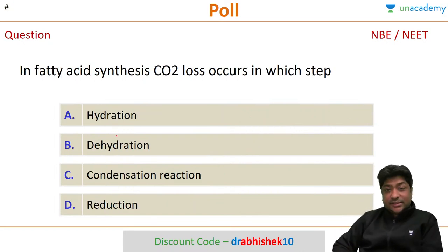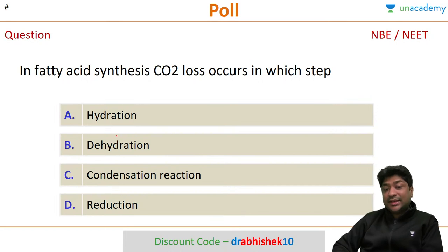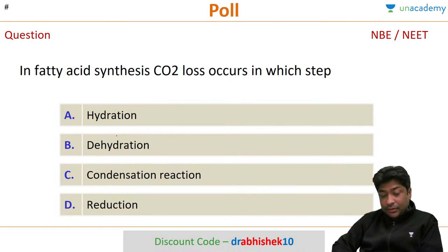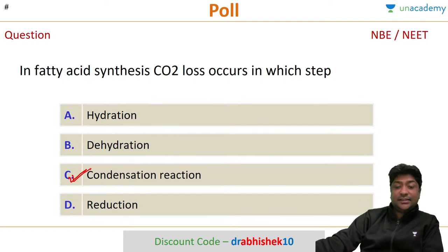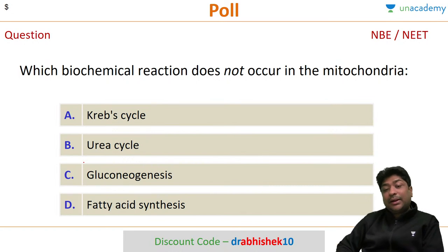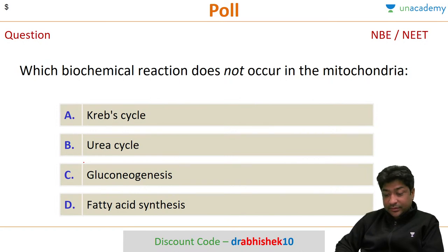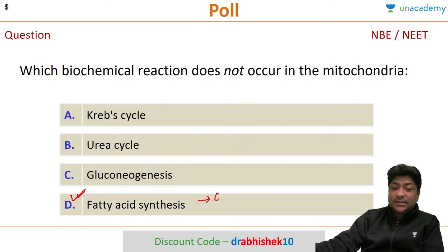Next question: carbon dioxide loss occurs in which step? Options are hydration, dehydration, condensation, or reduction. The correct answer is the condensation step. Last question in this set: which biochemical reaction does NOT occur in mitochondria? Options are Krebs cycle, urea cycle, gluconeogenesis, and fatty acid synthesis. The answer is fatty acid synthesis — it is a completely cytoplasmic process.